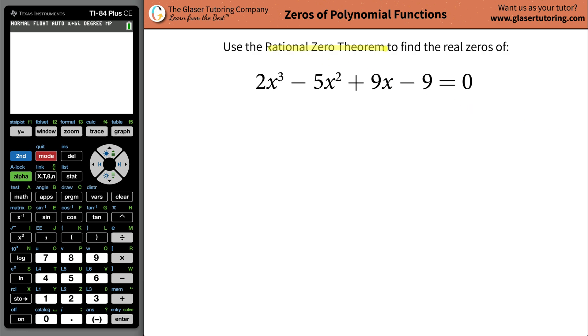Let's apply the rational zero theorem to find the real zeros of this polynomial function: 2x³ - 5x² + 9x - 9. First of all, what is the rational zero theorem? Well, it basically says this...